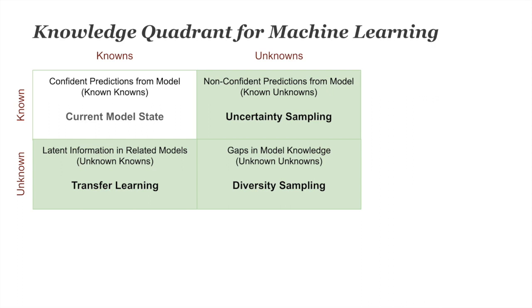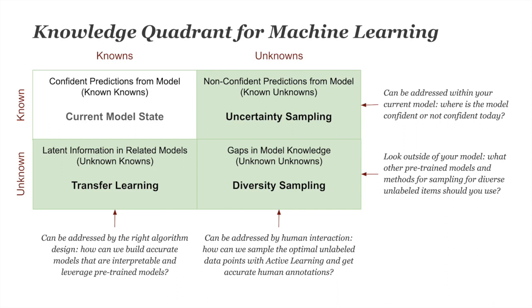Your unknown unknowns are harder to identify — how do you know when you don't know something? These are gaps in your current model's knowledge, and the set of methods for working out what you don't know that you don't know are known as diversity sampling, which we'll cover today. To round out the quadrant, transfer learning addresses your unknown knowns — what latent information exists in related machine learning models that, if adapted to your current problem, might increase your model's accuracy.